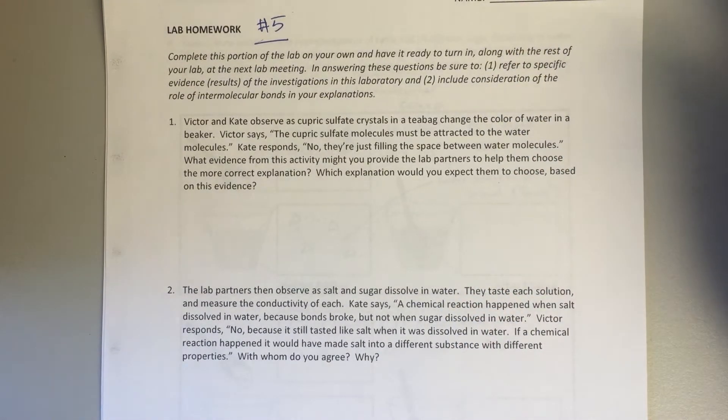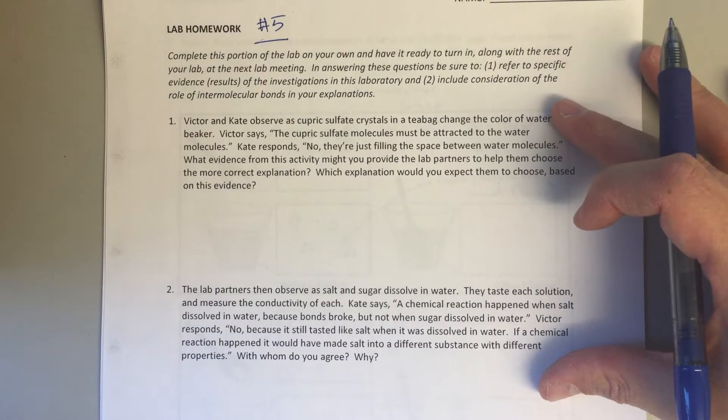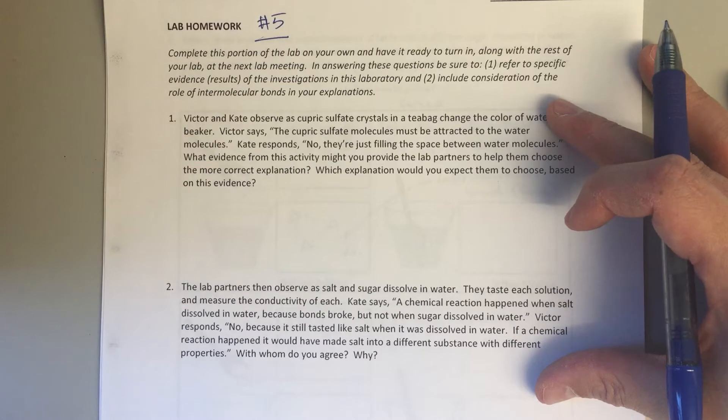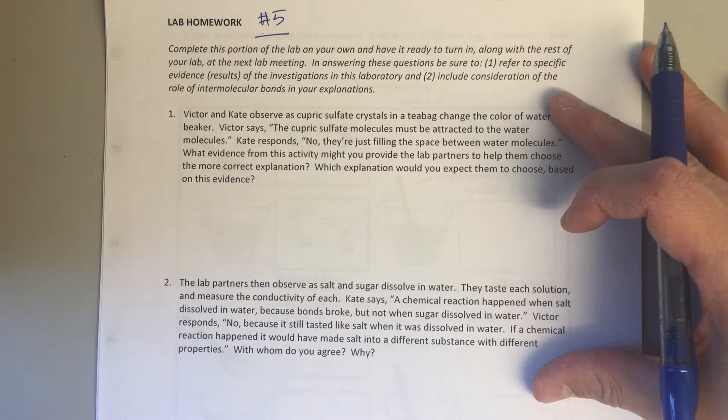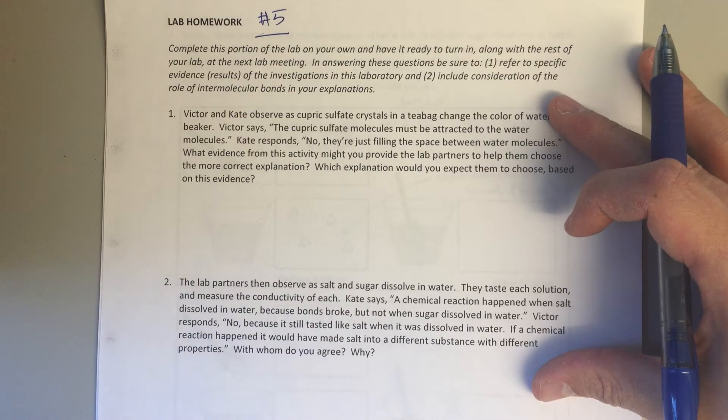These first two questions, we've got some conversations going on here between Victor and Kate, and you sort of have to choose who you're going to side with and then explain why you're siding with that one person. There's not necessarily one specific right answer we're looking for here, we're just looking for you to come up with some evidence and reasoning to back someone up in a conversation.